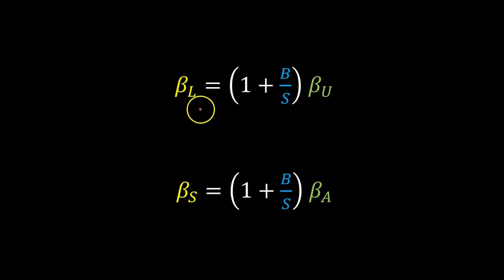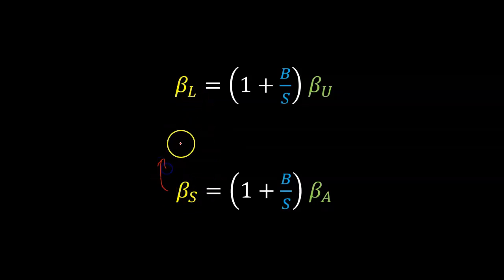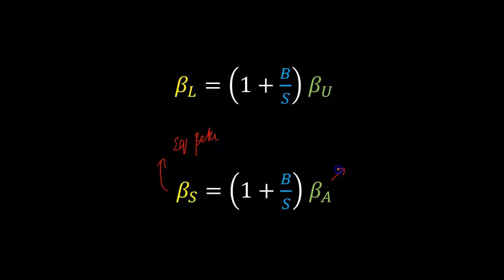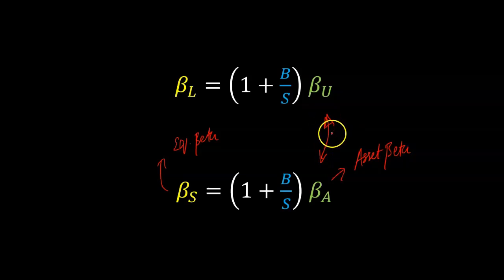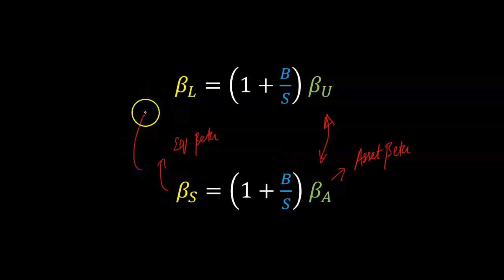Sometimes you may come across the same equation with a slightly different notation, where instead of levered beta, you see beta S. Beta S basically stands for equity or stock beta — so equity beta. And instead of unlevered beta, you might see beta A, where beta A is basically asset beta. Unlevered beta and asset beta essentially mean the same thing — just two different ways of saying the exact same thing. And a firm's equity beta is also called its levered beta; they mean the exact same thing.